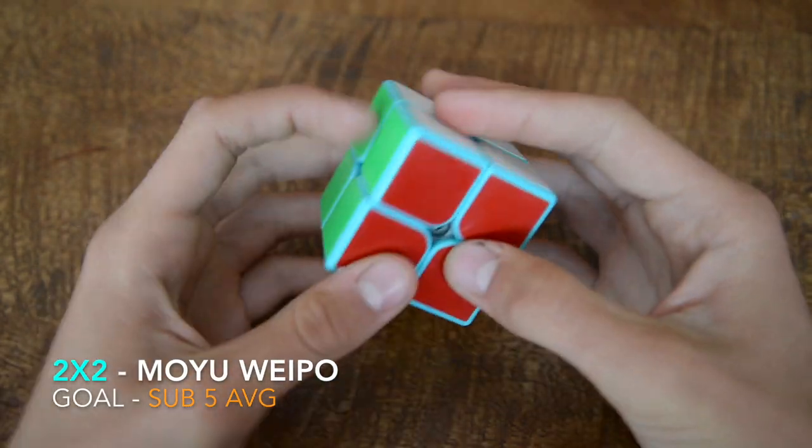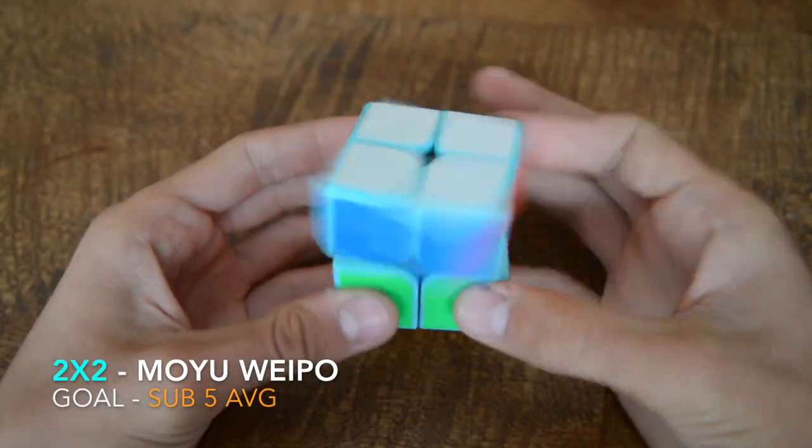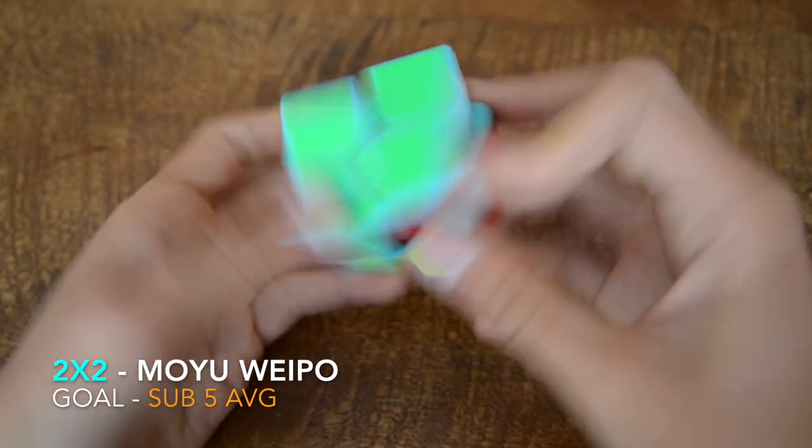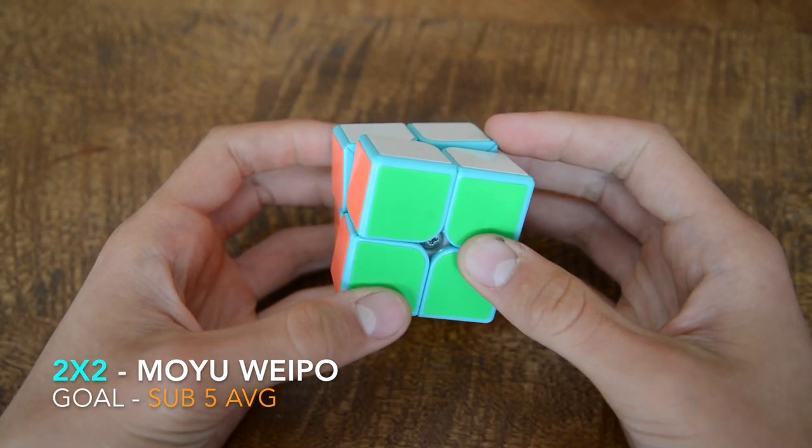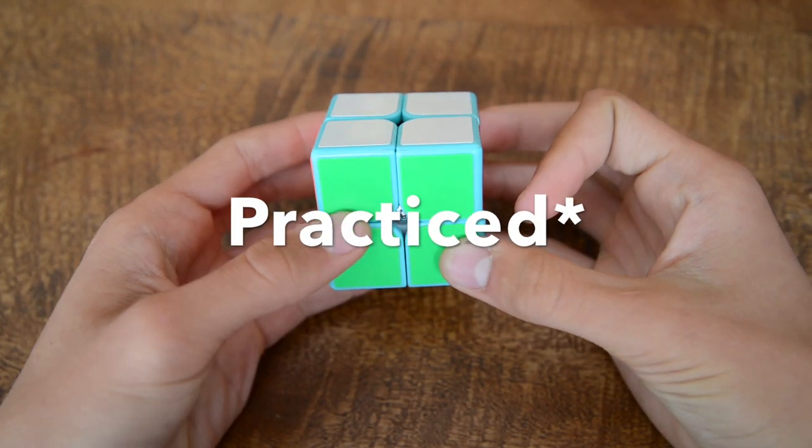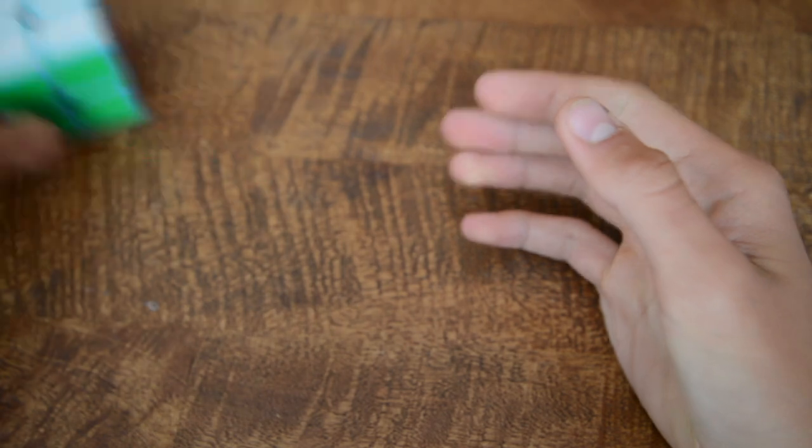This is the 2x2 event and I'm using the Moyu Weibo with blue plastic. My goal is to get the sub 5 average. I mean I haven't trained at all and we'll see how it goes.